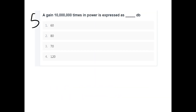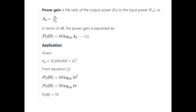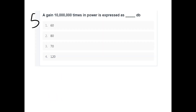A gain of 10 million (10 raise to 7) times in power is expressed as how many dB. Power gain in dB is 10 log10 of AP, that is 10 log10 of 10 raise to 7, which equals 70. Option C is 70 dB.